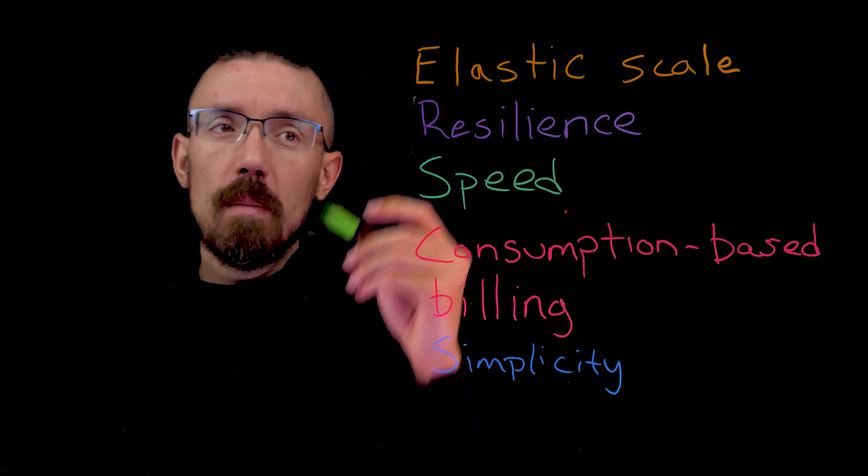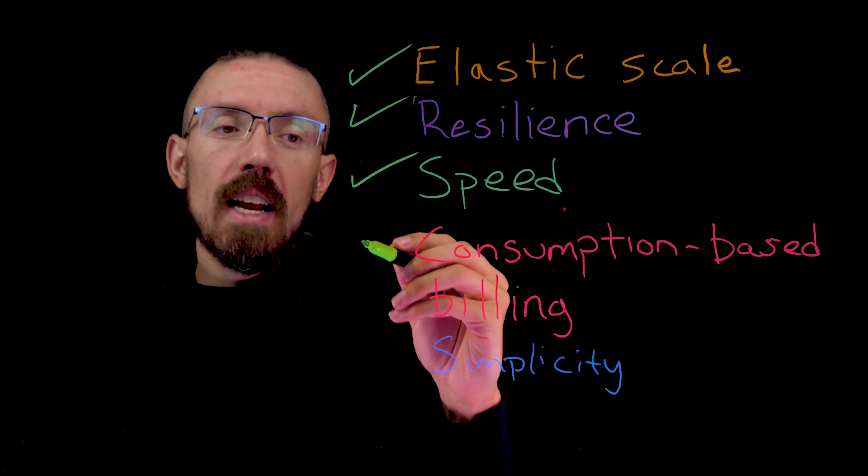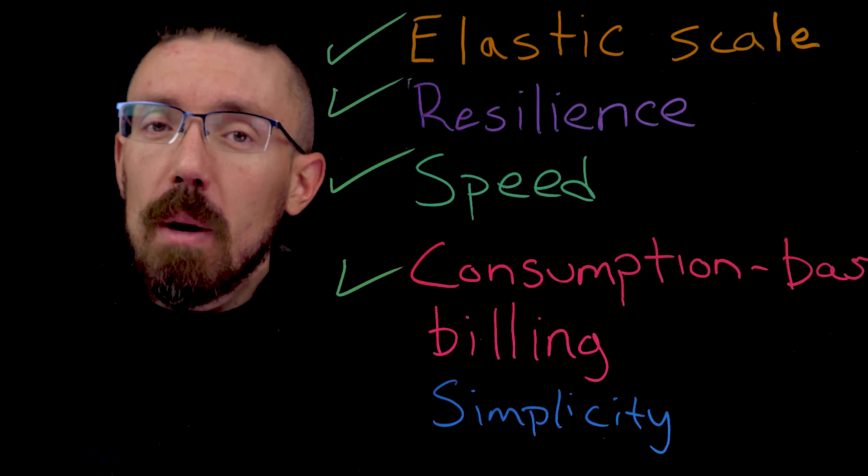So we've talked about elastic scale. We've talked about resilience. We've covered speed and consumption-based billing. What about simplicity?